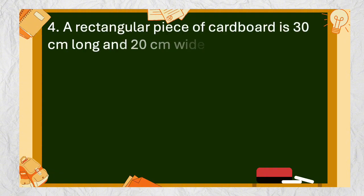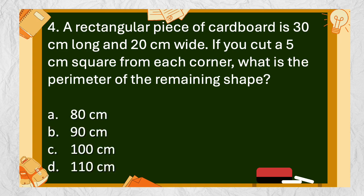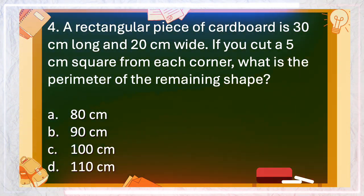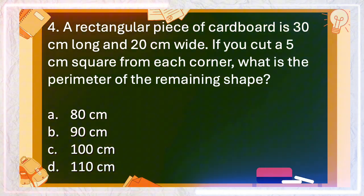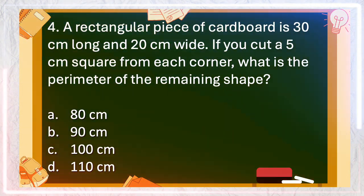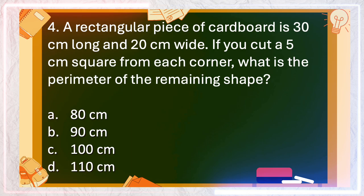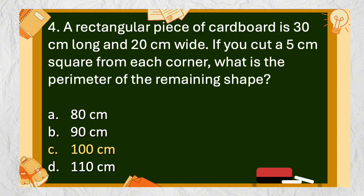Number 4: A rectangular piece of cardboard is 30 centimeters long and 20 centimeters wide. If you cut a 5 centimeter square from each corner, what is the perimeter of the remaining shape? A. 80 centimeters, B. 90 centimeters, C. 100 centimeters, D. 110 centimeters. The answer is letter C. 100 centimeters.